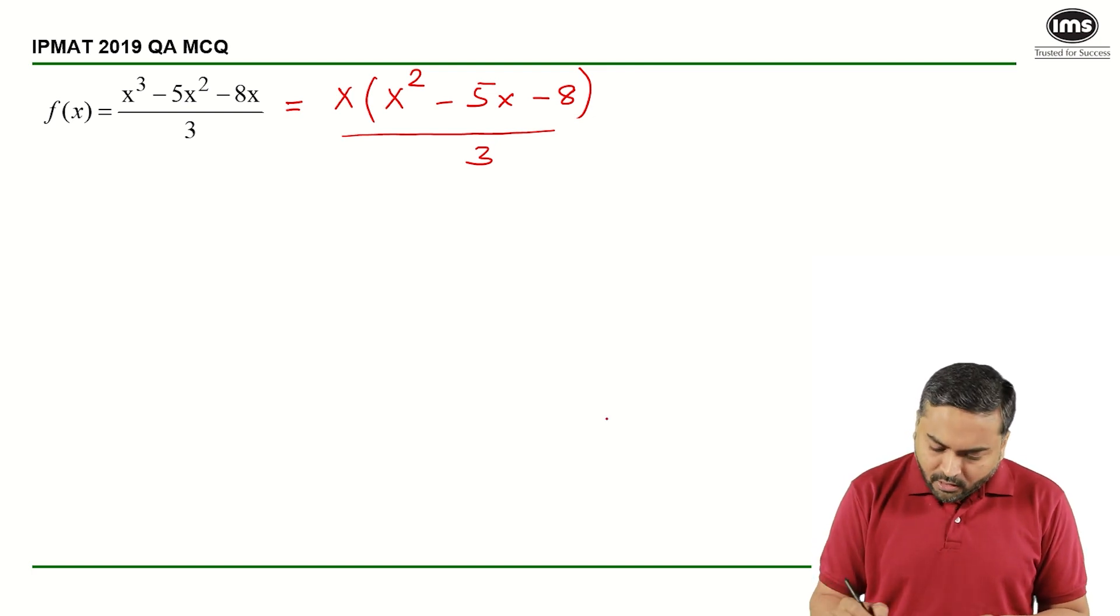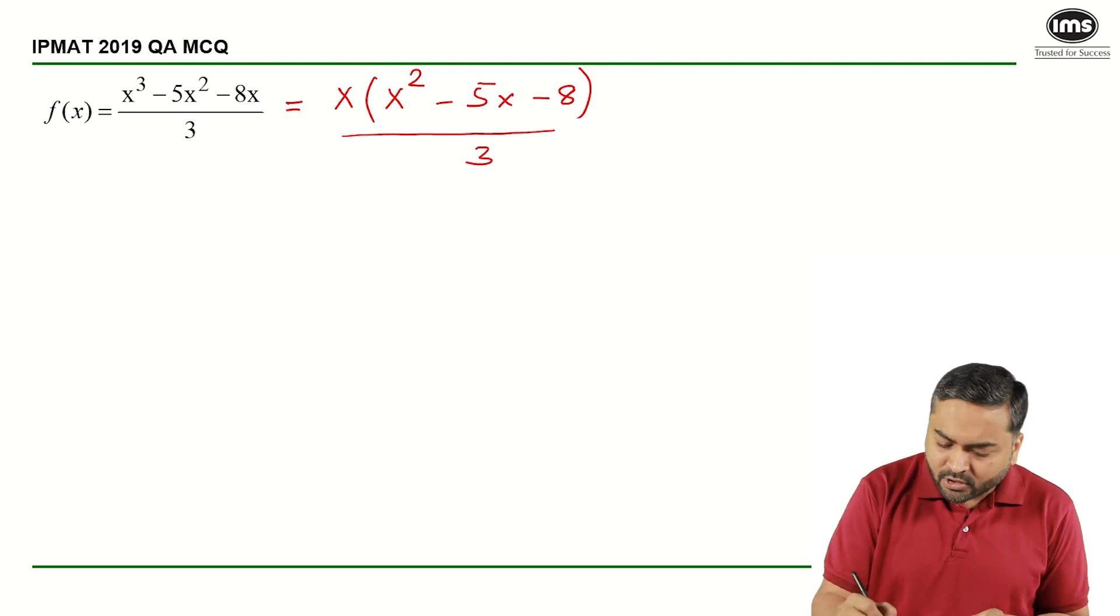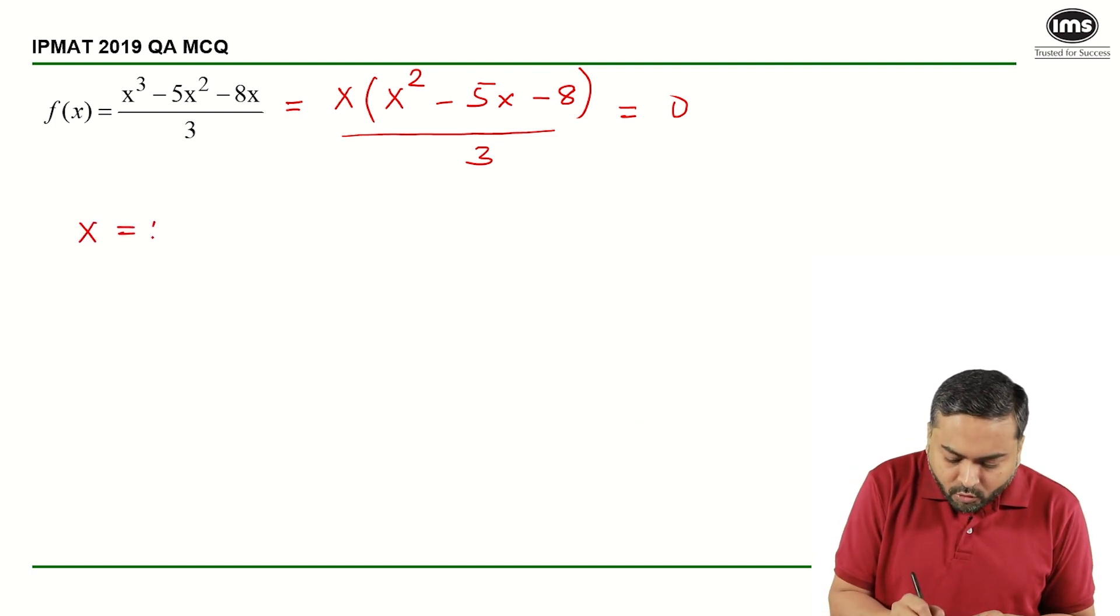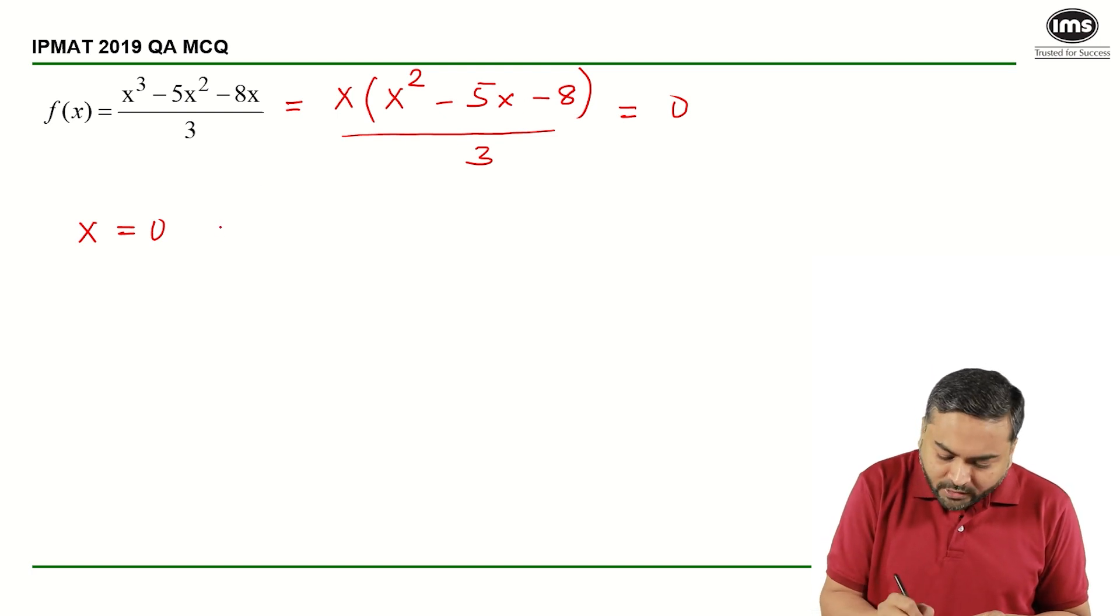Now basically, to find the roots of this expression, I will have to equate this to 0. So one of the roots I can see here is x is equal to 0, and to find the another root I will have to say that x square minus 5x minus 8 has to be equal to 0.